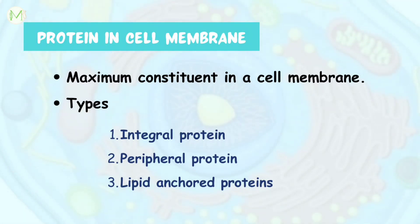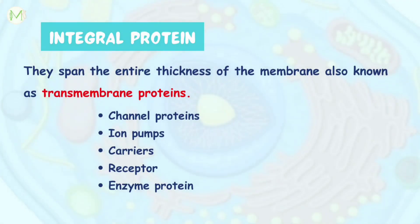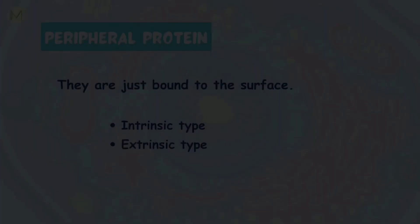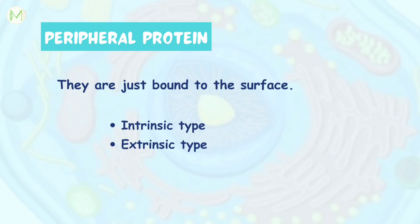Membrane proteins are the maximum constituents in all cell membranes and are the mosaic components of the fluid mosaic model. There are three types: integral membrane proteins, peripheral proteins, and lipid-anchored proteins. Integral proteins are present throughout the entire thickness of the membrane and are also known as transmembrane proteins. They serve as channel proteins, ion pumps, carriers, receptors, and enzyme proteins. Peripheral proteins are inserted lightly on the outer or inner border of the membrane and are of two types: intrinsic and extrinsic proteins.